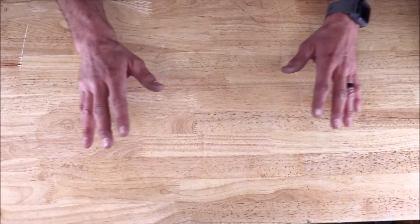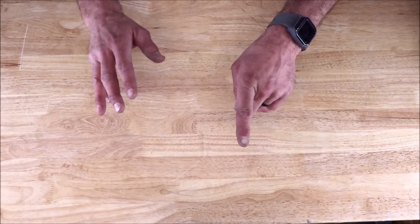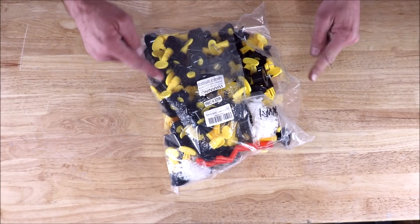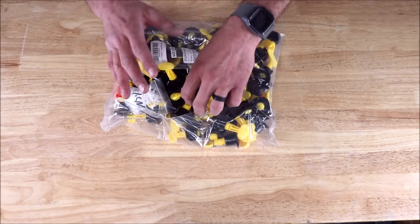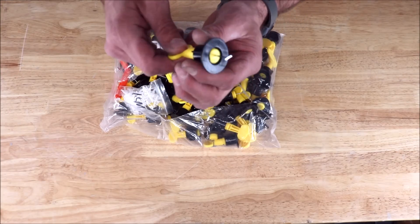The five dumbest tile tools. Number one: this style of tile leveling systems or anti-lippage systems.